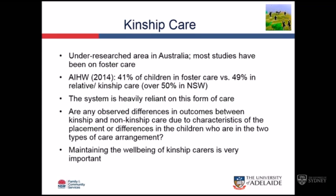One of the key issues we grapple with in this research is that if we see different outcomes in kinship care, is this due to the characteristics of the kinship carers, or is it due to differences in the children placed into kinship care, or a combination of both? This is the key research question - what I talked about yesterday as selection versus exposure effects. Is it the case that different types of children go into kinship care and have different trajectories and outcomes? Or is it that exposure to kinship care itself provides a different experience, which leads to different outcomes?